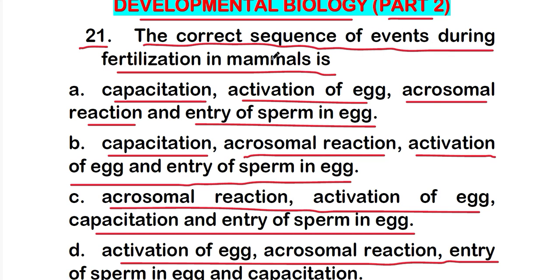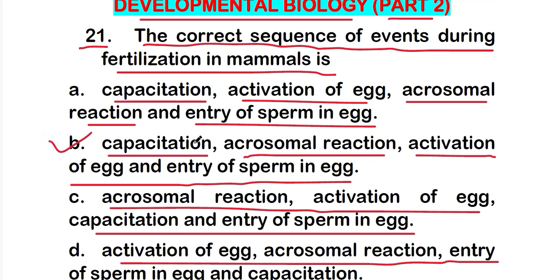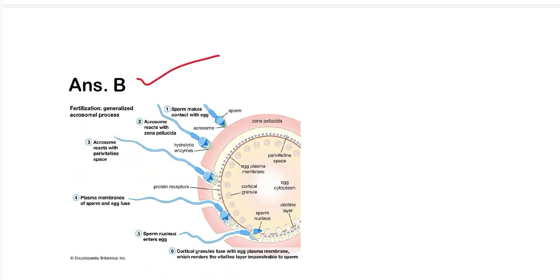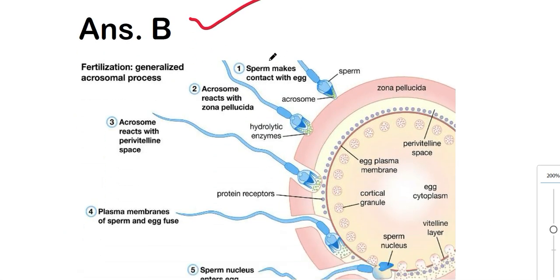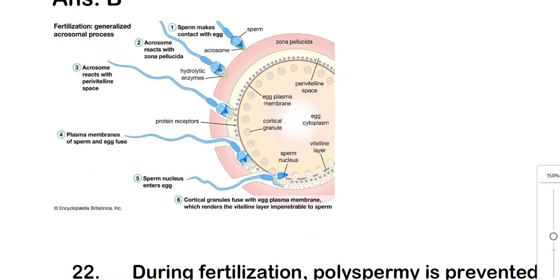The correct answer is option B: capacitation, then acrosomal reaction, then activation of egg, and then entry of sperm in egg. First, sperm makes contact with the egg. Then the acrosome reacts with the zona pellucida of the egg, followed by reaction with the perivitelline space. Then the plasma membranes of sperm and egg fuse, and ultimately the sperm nucleus enters the egg.